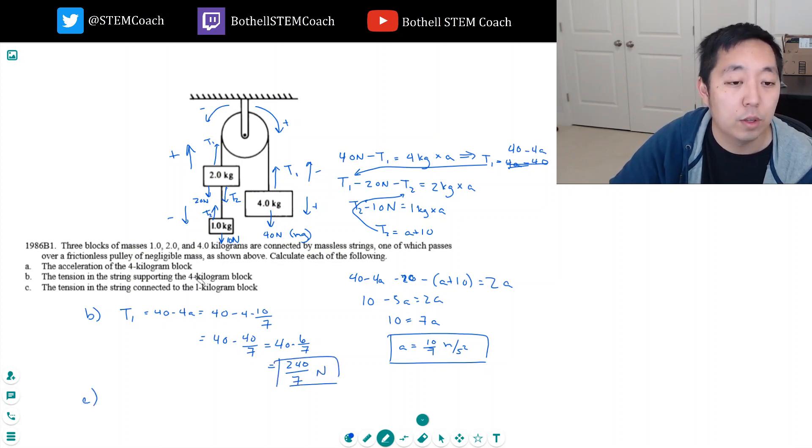The tension in the string connected to the 1 kilogram block, that's T2. T2 is equal to A plus 10. That's equal to 10 over 7 plus 10. That's 11 and 3 sevenths.